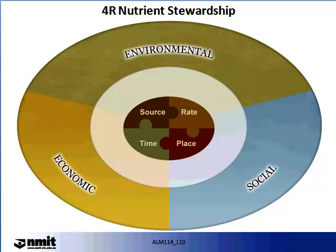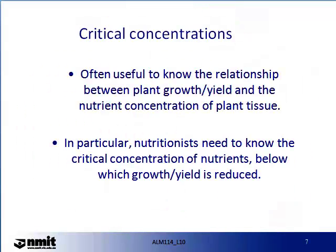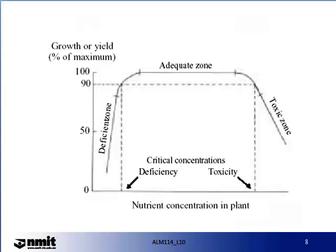You can use this concept to think about your own nutrient management practices. Critical concentrations are often used to know the relationship between plant growth and yield and the nutrient concentration of the plant tissue. Nutritionists need to know the critical concentrations of nutrients below which growth and yield is reduced. The figure on the screen shows the relationship of growth or yield against nutrient concentration in plants. This defines zones: the adequate zone, the zone where plants are in deficiency, and zones where plants are in toxicity. These will vary for species, but the pattern tends to be generic to all plants.